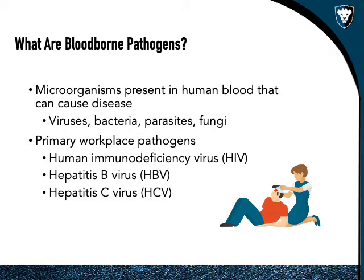Bloodborne pathogens are microorganisms present in human blood that cause disease. A virus would be considered a bloodborne pathogen, as would any kind of bacteria, parasites, or fungi. The big ones we're concerned about in the workplace — most commonly in emergency medical services such as EMTs, doctors, and nurses — are HIV, hepatitis B, and hepatitis C.